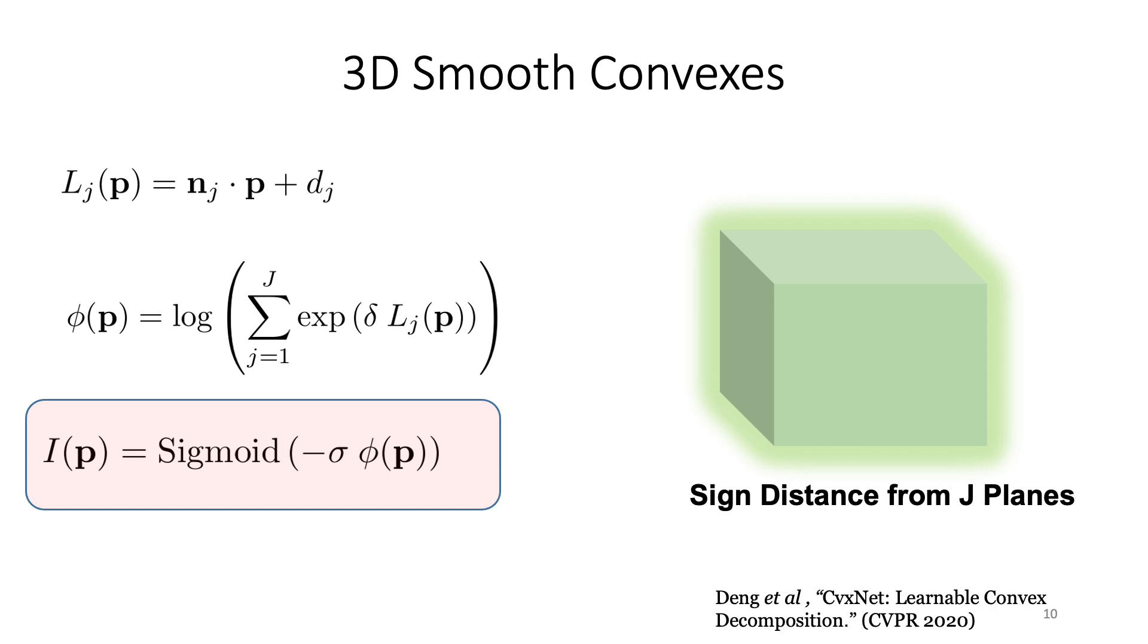If you look at these 3D smooth convexes, the basic idea is very simple. So we utilize the sine distance from J hyperplanes, and this sine distance represents for each hyperplane, and then if we take the max or approximate that distance for all the hyperplanes, we have the phi function. And if we take the sigmoid, that basically gives you the indicator function which can control the transient effect of the smooth convex. We have two extra parameters here, which is the sigma and the delta.